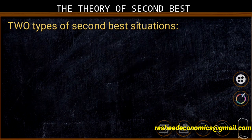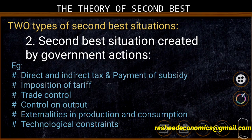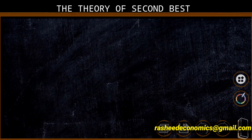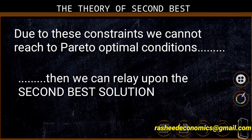The second situation arises from restrictions or constraints on account of governmental actions such as direct and indirect taxation, payment of subsidy, imposition of tariff or non-tariff restrictions, trade controls, output controls, etc. There may also be production and consumption externalities, technological constraints, and other constraints. Whether behavioral or institutional, whatever the constraint may be, we cannot reach the Pareto optimum condition — the first best solution. We know that Pareto optimality is the first best solution, and if due to these constraints we cannot reach it, then we can reach the second best solution.